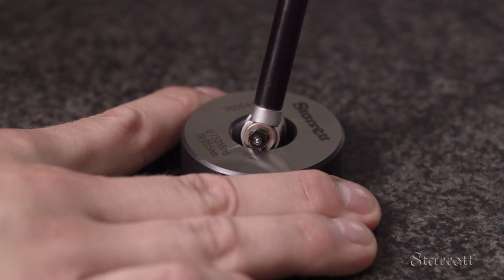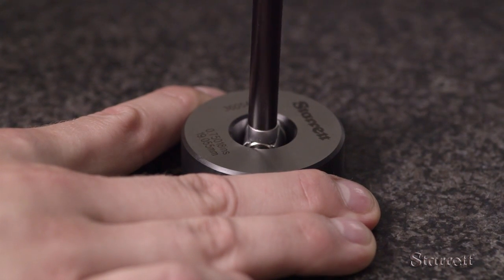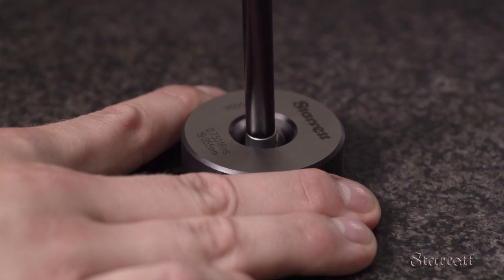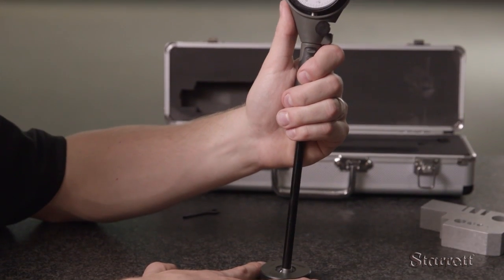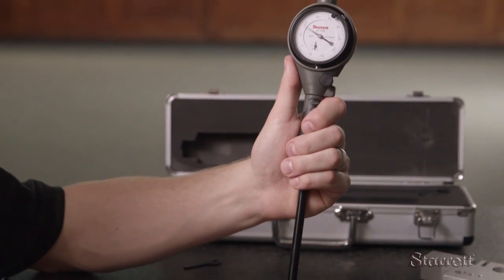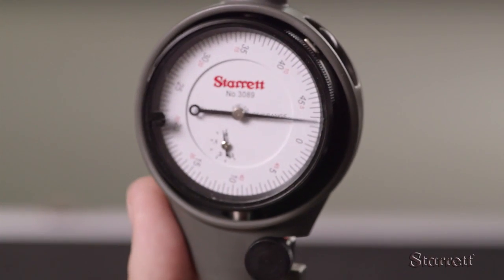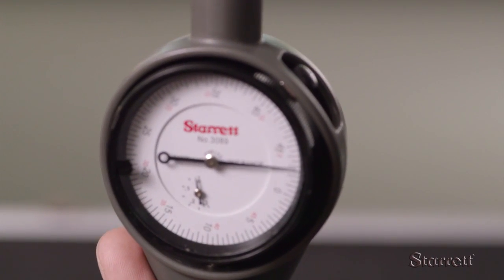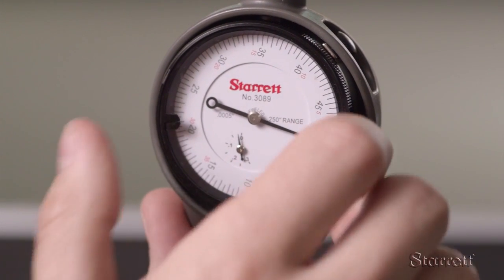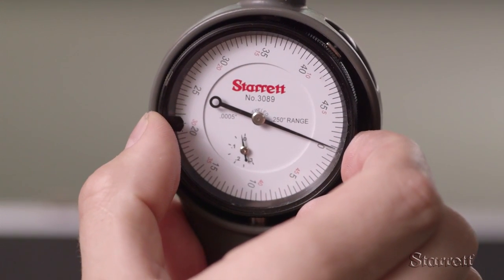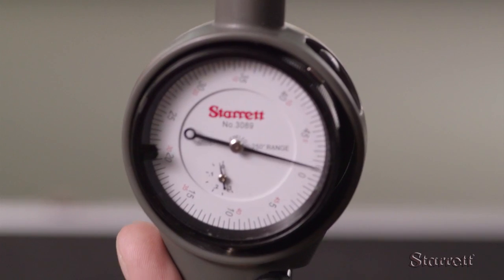Next, set the gauge to a standard. We will use a 0.750 inch setting ring. With the dial face forward so you can read it, tilt it so the contacts are at an angle and move the gauge into the setting ring. Slightly rock the gauge back and forth and adjust the dial face to exactly zero when the dial is at its minimum position.